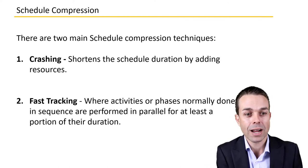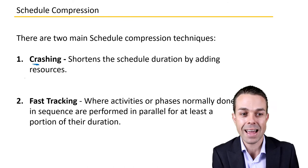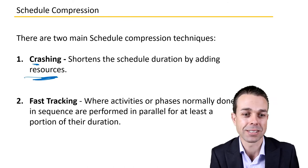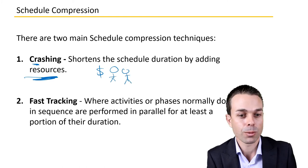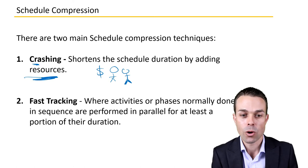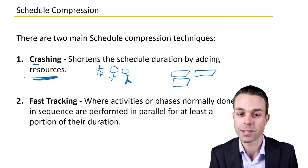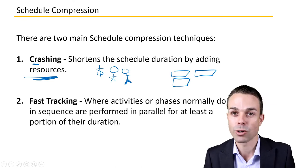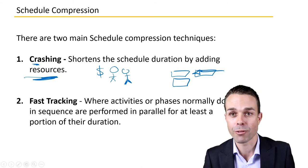Those two techniques are crashing, which shortens the schedule duration by adding resources — which can be very costly since we're adding more people. The other one is fast tracking, where activities or phases normally done in sequence are now performed in parallel, or at the same time, for at least a portion of their duration. That way we're able to cut back on the timeframe.